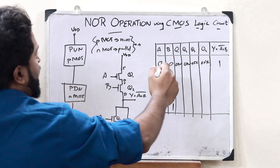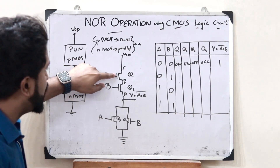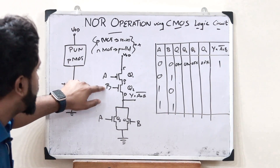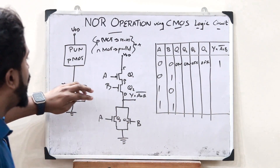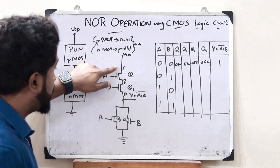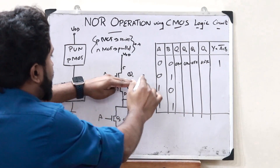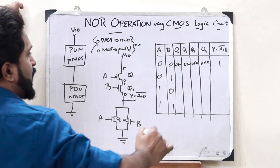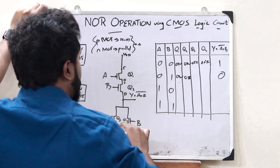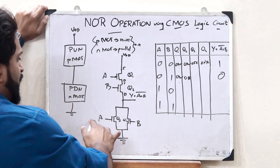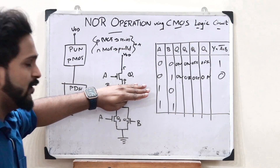Next, let us take the case in which A is 0 and B is 1. When A=0, the PMOS transistor Q1 is on. But in the case of a PMOS transistor, when we give 1 as the input, Q2 becomes off. Therefore, the circuit breaks at Q2 and we will not get any output, so the output is 0. In the pull-down network, when A=0, Q3 is off, but when B=1, Q4 is on. However, it doesn't matter because the circuit is broken at Q2 in the pull-up path.